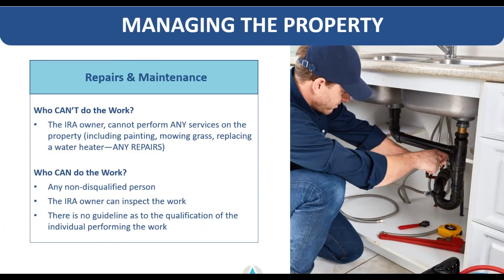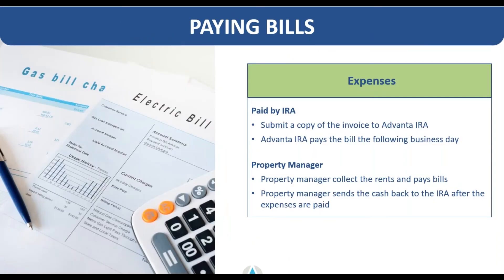As far as managing the property, the retirement account holder cannot do any sweat equity — meaning any manual labor on the property. All of that must be outsourced to qualified professionals: a local handyman or any non-disqualified person can conduct the type of maintenance needing to be done on your IRA-owned property. Any expenses need to be paid using the retirement account funds. We have a client online portal accessible 24/7 to submit payment requests, or you could email those requests directly to your account manager and we will get those paid the following day. If you have a property manager in place, they may hold their own portion of your proceeds to pay those types of expenses and send any additional cash thereafter.